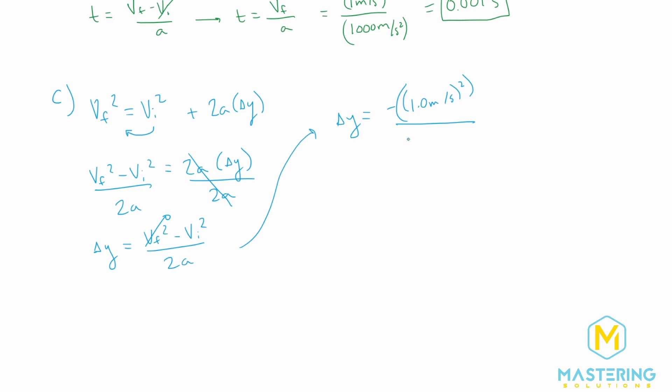And that will be divided by 2 times the acceleration. But in this case, the acceleration is gravity, because the only thing that's acting on it after it jumps is, of course, gravity. So it's negative 9.8 meters per second squared, because gravity is pointing down in this case.